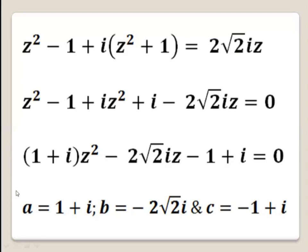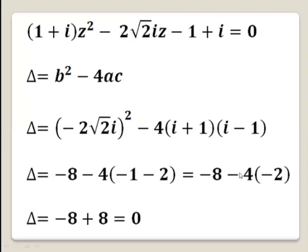Here we have a quadratic equation of the form a·z squared plus b·z plus c equals 0, where a equals 1 plus i, b equals minus 2 radical 2i, and c equals minus 1 plus i, which is i minus 1.